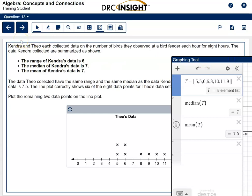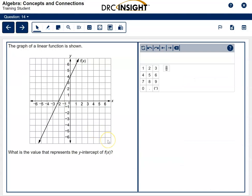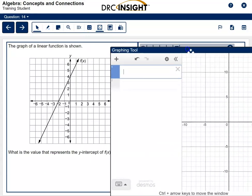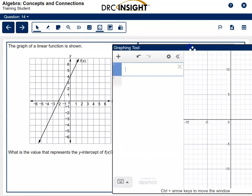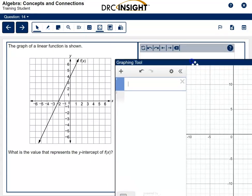Let's go on to the last question. Question 14. We have the graph of a linear function shown. What is the value that represents the y-intercept? I bet most of y'all don't need any calculator trick for this, but I'm going to go ahead and show you that there are some things you can do if you need them. So the first thing I'm going to do is create a table.